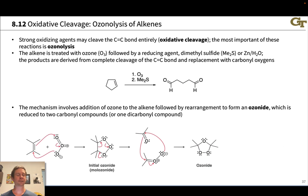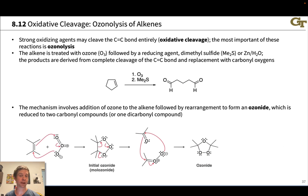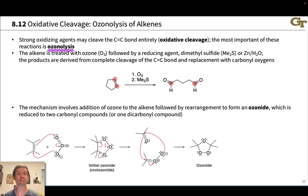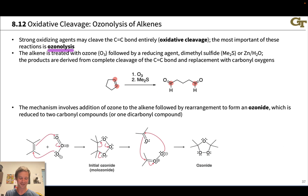The most common oxidant used to do this is ozone, and the reaction is called ozonolysis. The alkene is first treated with ozone, and then we treat with a reducing agent. This can vary a little bit — you'll see zinc and water used, or you'll see dimethyl sulfide, Me₂S or DMS, used for this. The net result is complete cleavage of the carbon-carbon double bond.